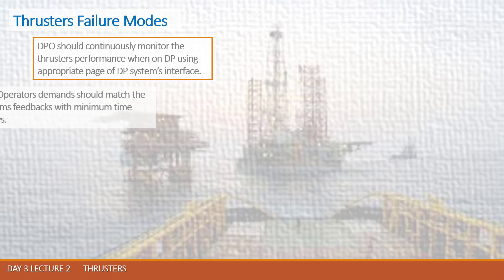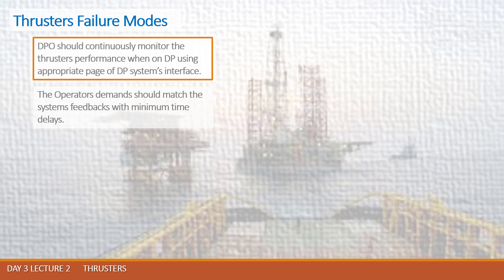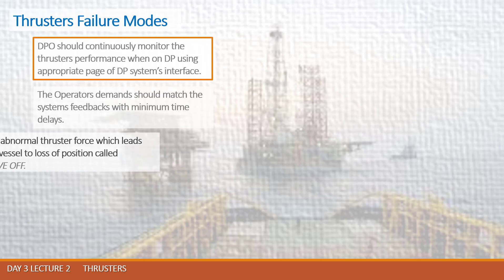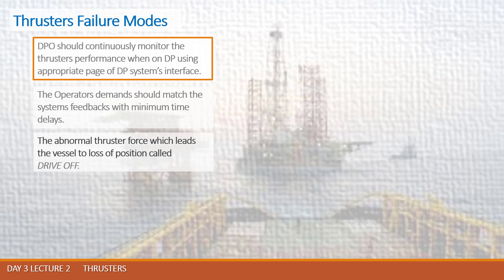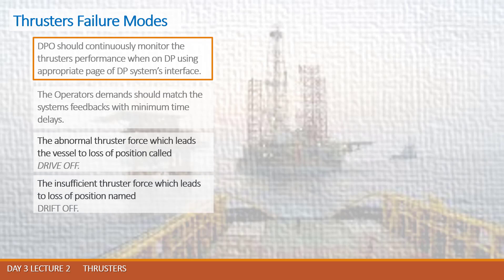A few definitions here are very important — write them somewhere. The abnormal thruster force which leads the vessel to loss of position is called a drive-off case. The insufficient thruster force which leads to loss of position is named a drift-off case. If a thruster runs away on full pitch due to any reason, then the responsible DPO must stop it immediately. Remember that.